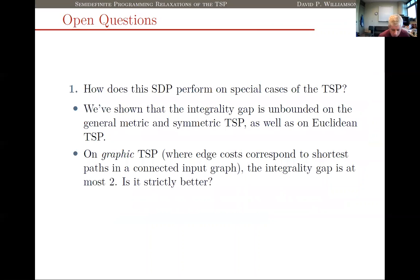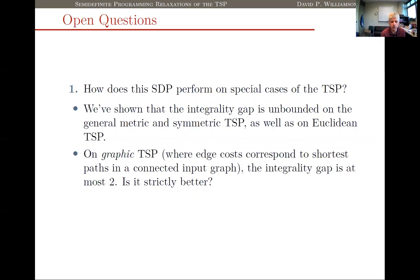That brings me to the end of my time. Let me pose some open questions. We can ask how either of these SDPs performs on special cases of the TSP. We've shown the integrality gap is unbounded for general symmetric metric costs and even for Euclidean TSP. For the special case of graphic TSP — where edge costs correspond to shortest paths in some graph — which has been considered in the literature including by András Sebő on this call — we can show that the integrality gap of the 2008 SDP is at most two.